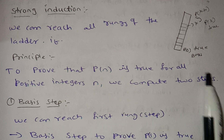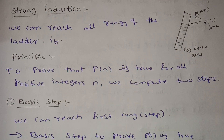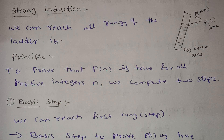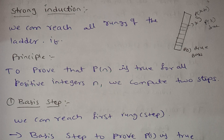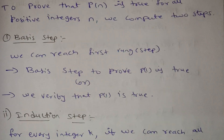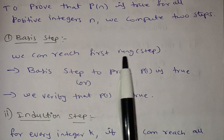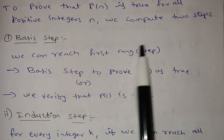The principle is to prove that p is true for all positive integers n. We compute two steps. The first step is the basis step, and the second step is the induction step. For the basis step, we can reach the first rung.